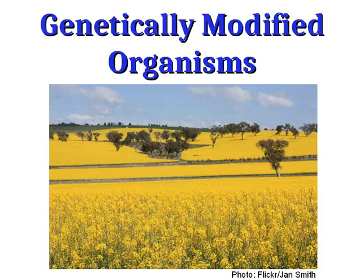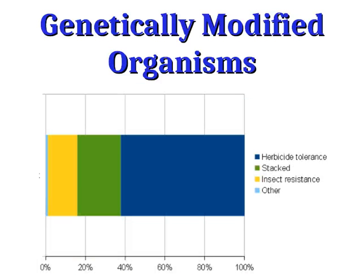Corn, cotton, and soybeans are also very commonly grown in genetically modified form, especially in the United States. The specific genetic modifications we usually see in the market today are two: herbicide tolerance and insect resistance. By far the vast majority of genetically modified crops being grown right now have one or both of those characteristics.